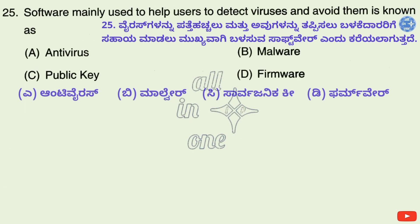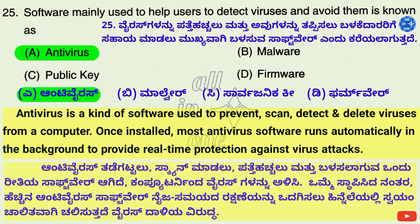Question 25. Software mainly used to help users detect viruses and avoid them is known as — Options: A. Antivirus, B. Malware, C. Public key, D. Firmware. Right answer is A: Antivirus. Antivirus is a kind of software used to prevent, scan, detect, and delete viruses from a computer. Once installed, most antivirus software runs automatically in the background to provide real-time protection against virus attacks.